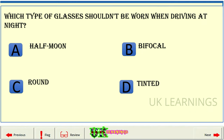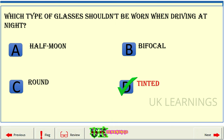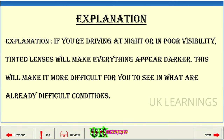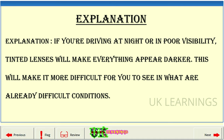Which type of glasses shouldn't be worn when driving at night? A: Half moon. B: Bifocal. C: Round. D: Tinted. The correct answer is D: Tinted. Explanation. If you're driving at night or in poor visibility, tinted lenses will make everything appear darker. This will make it more difficult for you to see in what are already difficult conditions.